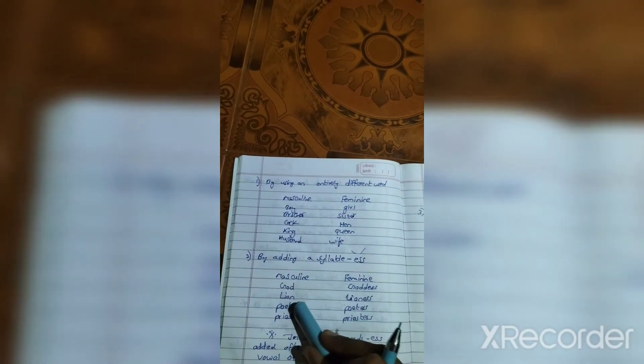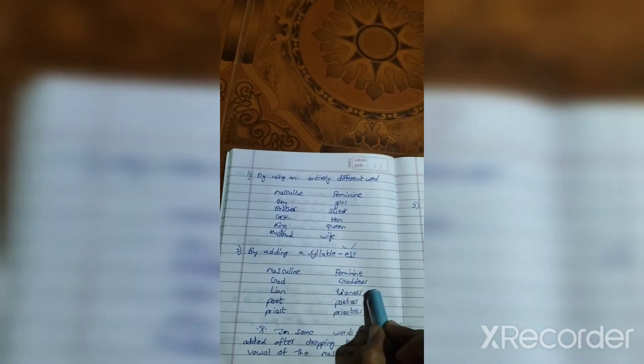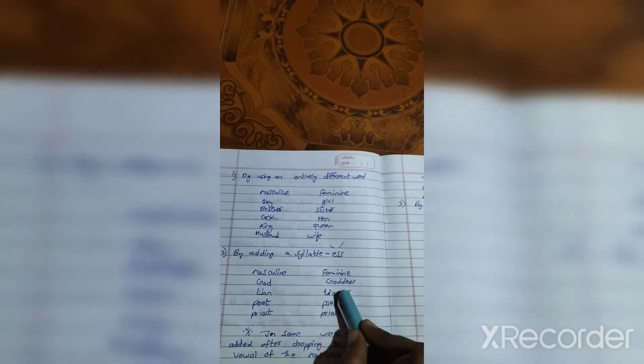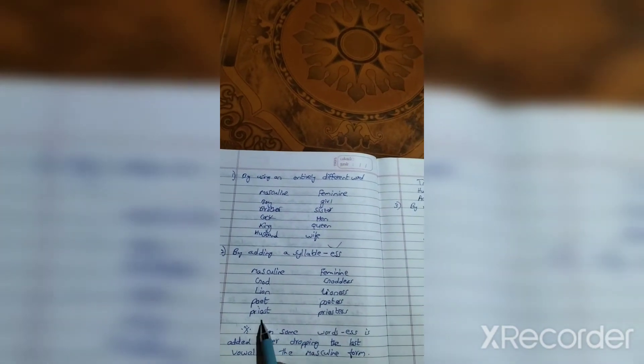By adding the syllable 'ess' to form feminine from masculine. Examples: god-goddess, lion-lioness, poet-poetess, priest-priestess.